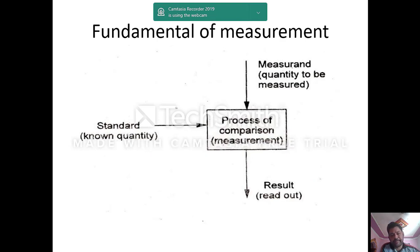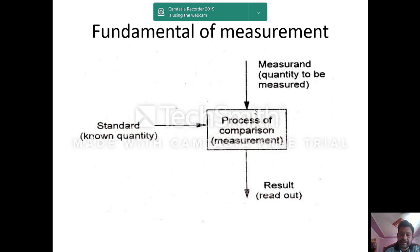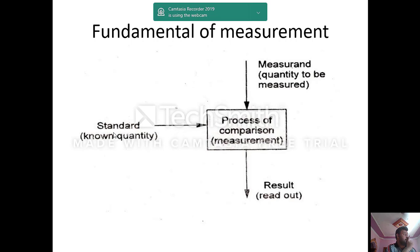The fundamentals of measurement have three components: measurand, standard, and reading. Measurement is a process of comparing standard and measurand. The outcome of the comparison process gives the reading. Measurand is the quantity of the item to be measured; standard is the known quantity. You can understand this easily with a physical balance or weight scale — one side we keep weights, the other side we keep the quantity to be measured.